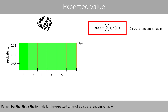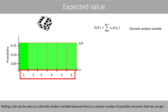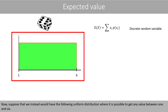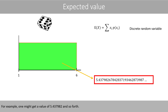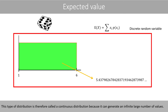Remember that this is the formula for the expected value of a discrete random variable. Rolling a die can be seen as a discrete random variable because there is a certain number of possible outcomes that we can get. Now, suppose that we instead have the following uniform distribution where it is possible to get any value between 1 and 6 — for example, one might get the value of 5.437982 and so forth. This type of distribution is therefore called a continuous distribution because it can generate an infinitely large number of values.